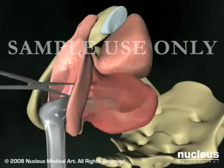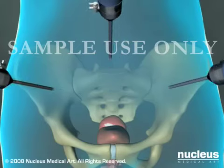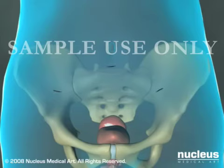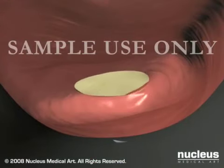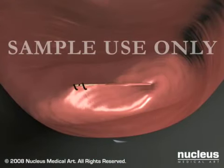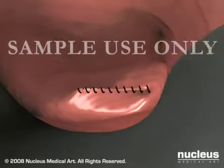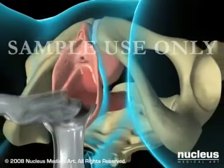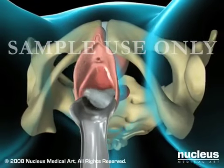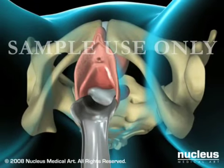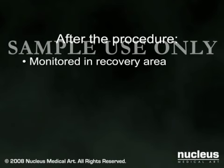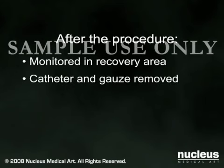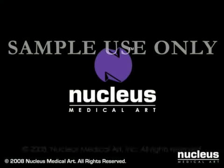A laparoscope can also be used for a salpingo-oophorectomy. Finally, your surgeon will close the incisions on your abdomen with stitches. In all three hysterectomy procedures, the top of the vagina is stitched closed and gauze packing is placed in the vagina to prevent excess bleeding. After your surgery, you'll be taken to the recovery area for monitoring. The catheter and the gauze packing will be removed before you leave the hospital.